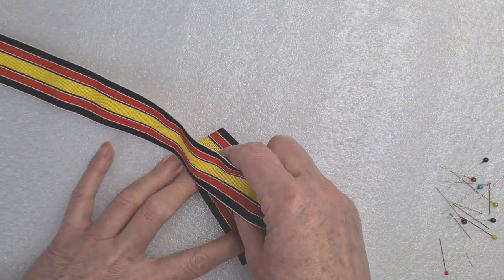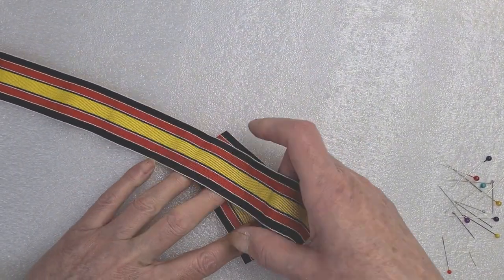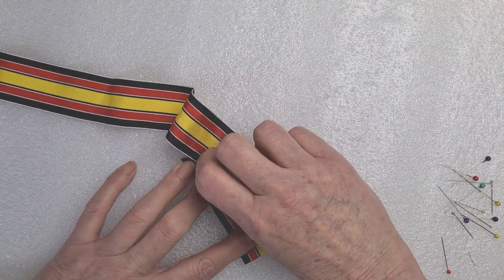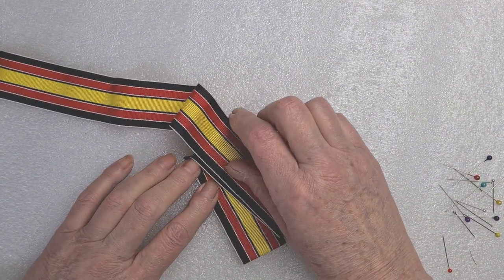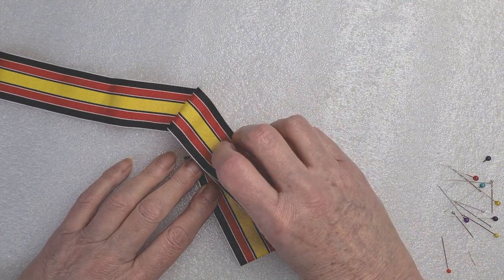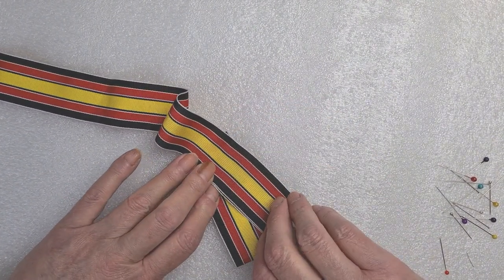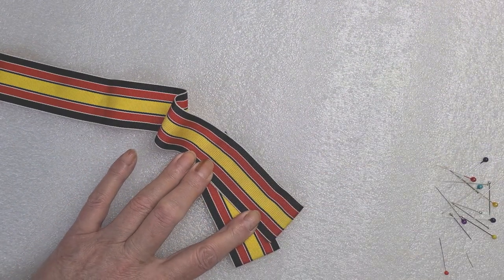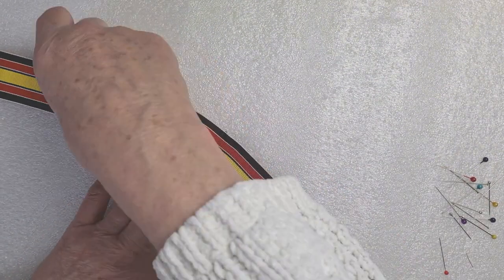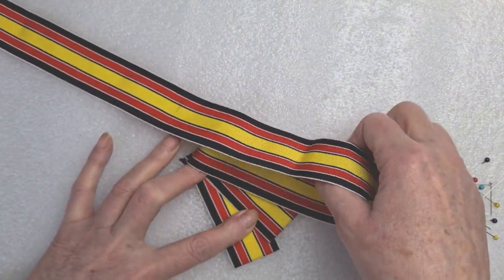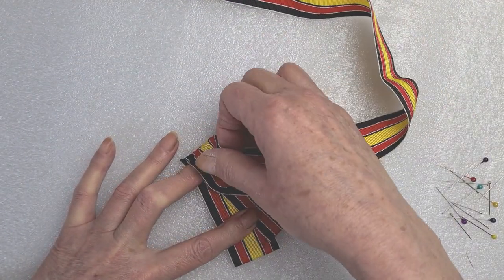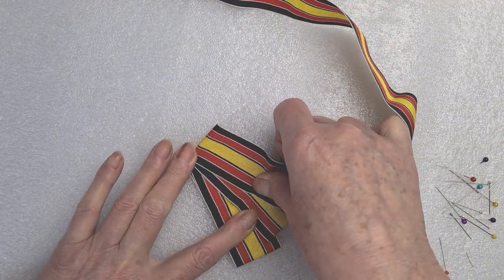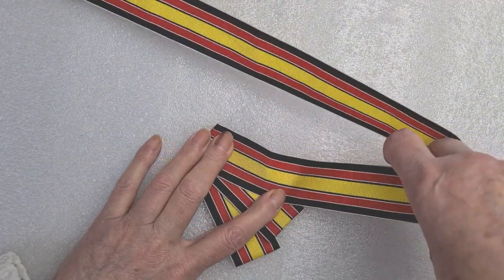Then I'm going to fold over again and do it slightly smaller, like this. Try and get it all even. It's not very easy doing it on here. I'm doing it on a foam board so that I can pin it. Then we fold again and we're going to go around in decreasing lengths.